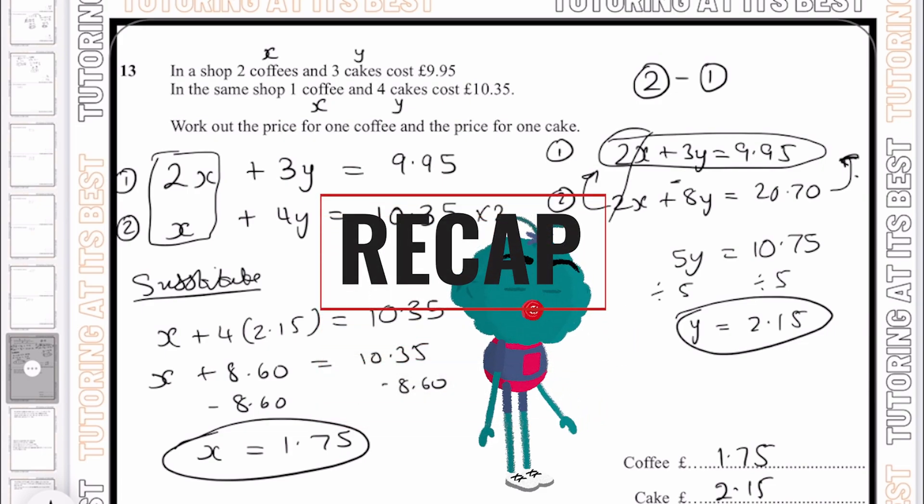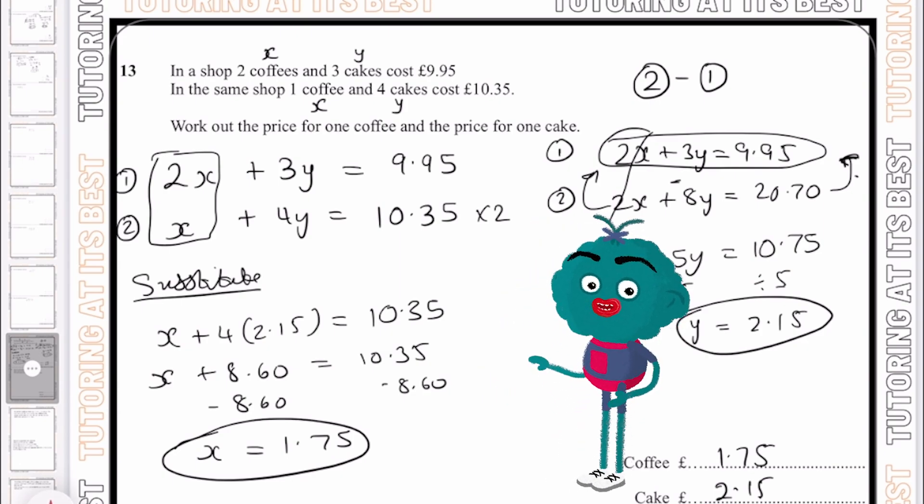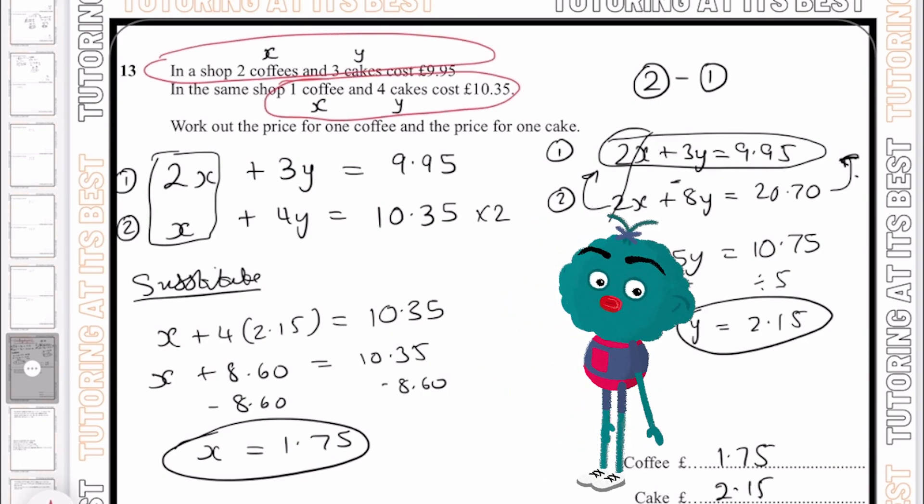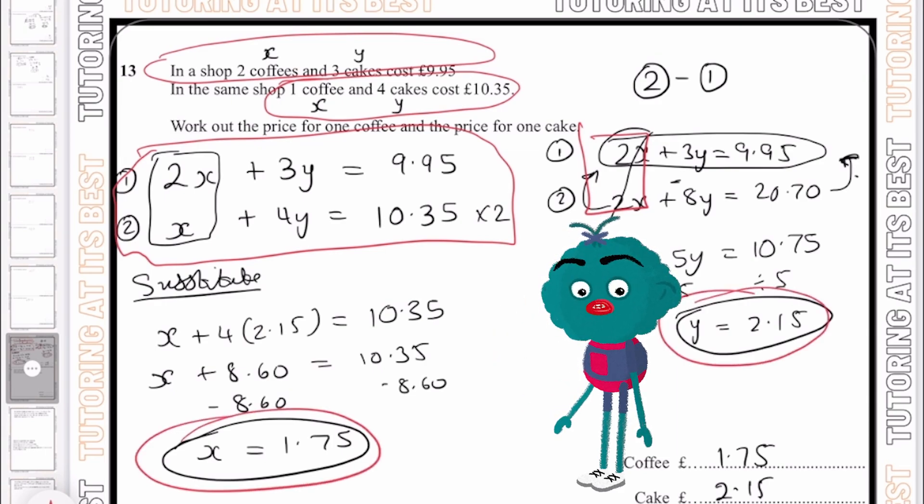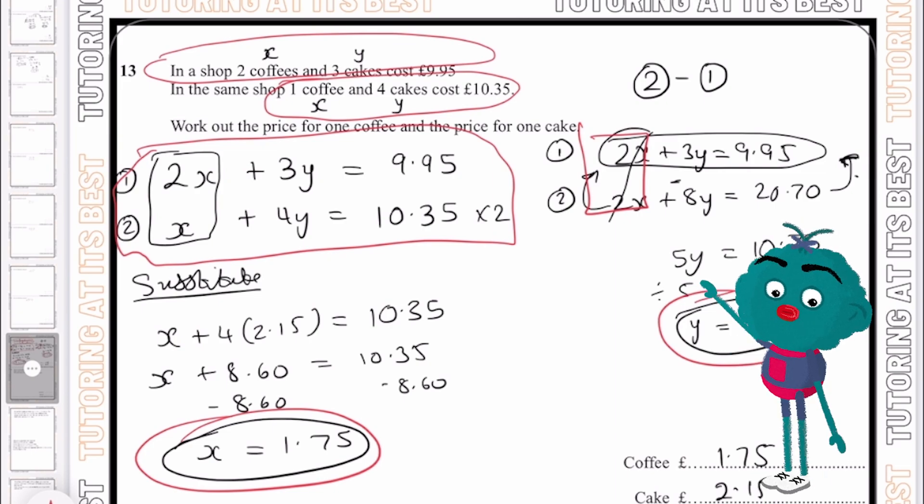So what have I done? I've gone ahead and converted my problem solving questions into two equations. I've taken these two sentences and created these two equations. I've then made the coefficients the same, which is 2x, before working out y, and then finally substituting it to get my second variable. Let's now move into the next one.